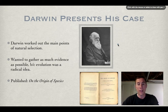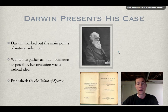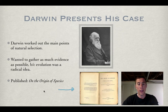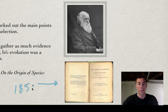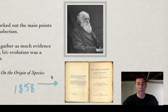He wanted to gather as much evidence as he could, because during this time evolution was a very radical idea. And eventually, in 1858, he published this book right here called The Origin of Species. That really was all of his evidence together, and that's how he presented his case.